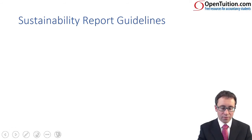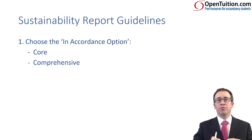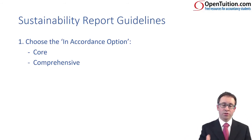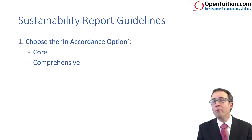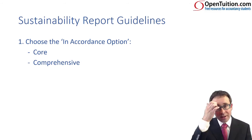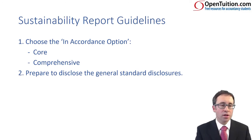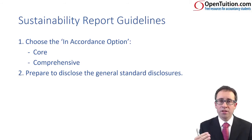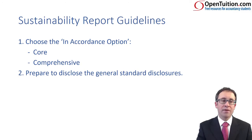In terms of the guidelines, if a business wants to prepare its sustainability report in accordance with the Global Reporting Initiative framework, it has to choose two options: either the core or the comprehensive option, and it will disclose which option it has followed. The core option has a little bit less detail than the comprehensive option, though the level of difference is relatively small. You then need to think about your general standard disclosures — there are seven — which apply to both the core and comprehensive options, though the comprehensive option requires slightly more disclosures under certain sub-categories.